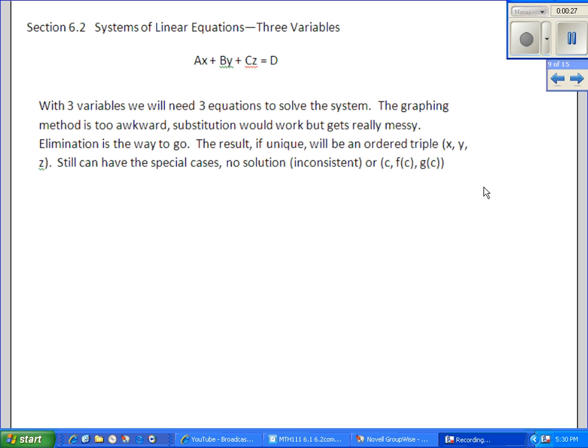The result, our solution to the system, if it's a unique solution, is going to be what we call an ordered triple: x, y, and z. We can still have the two special cases: the no solution (inconsistent) or the dependent system where we have to describe the solution set in terms of some arbitrary constant.